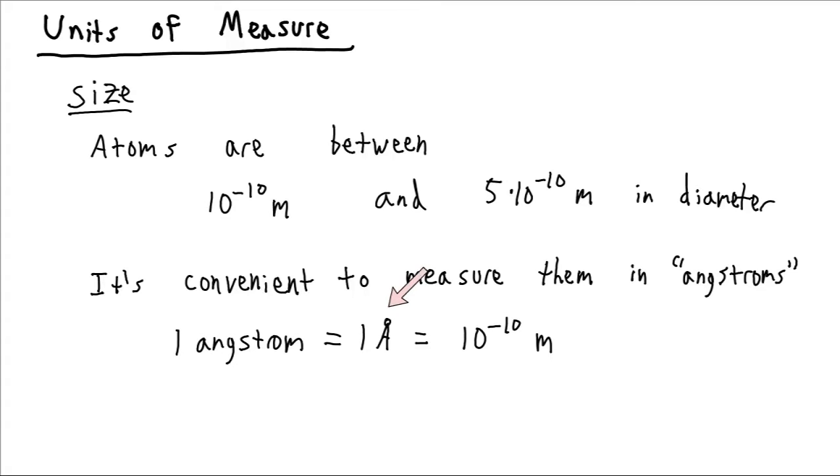It's written as an A with this circle accenting it, and an angstrom is equal to 10 to the minus 10 meters. This is not an SI unit, however it's still commonly employed in the sciences.